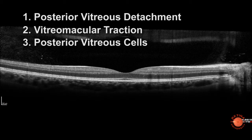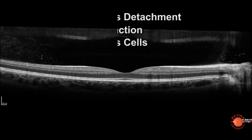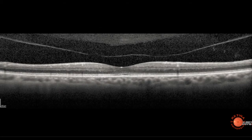The vitreous is normally attached at the optic nerve, the macula, and the vessels. This is where you might look for an attachment when you're looking for a posterior vitreous separation. This scan I captured over the optic nerve was from someone who was having some floaters, and I could see that the vitreous had partially separated but was still attached at the nerve.